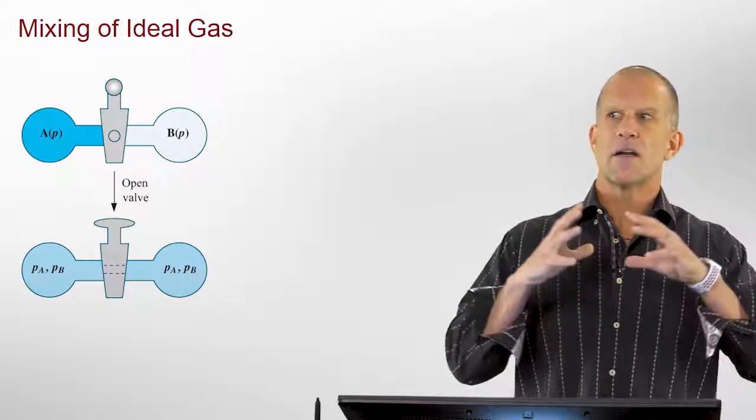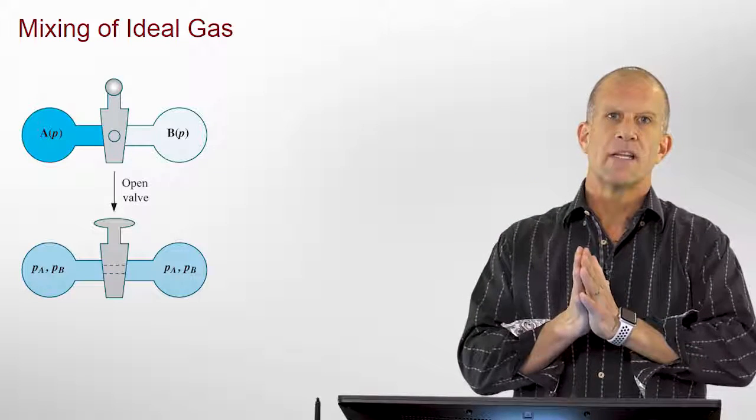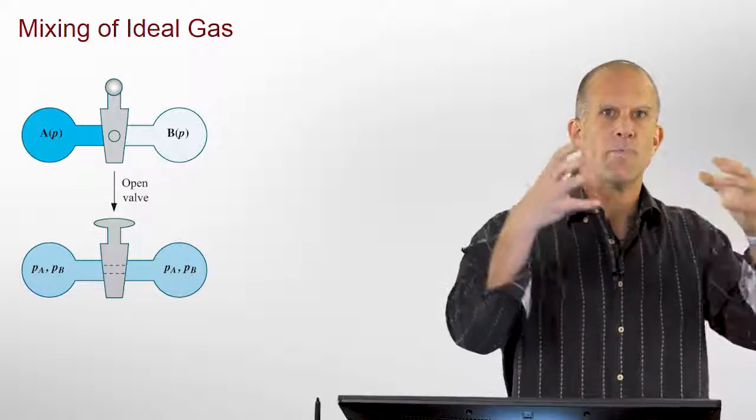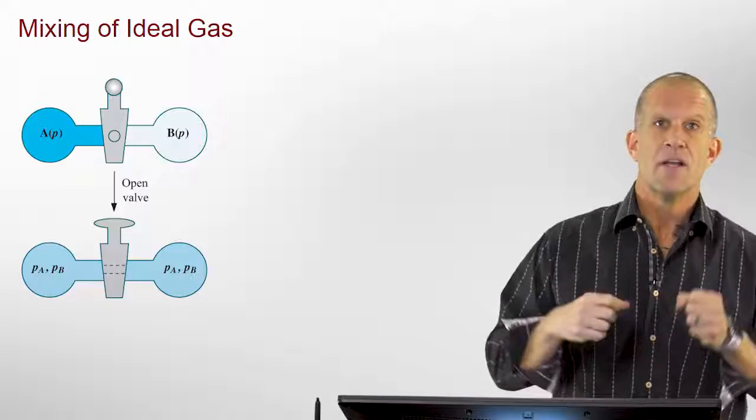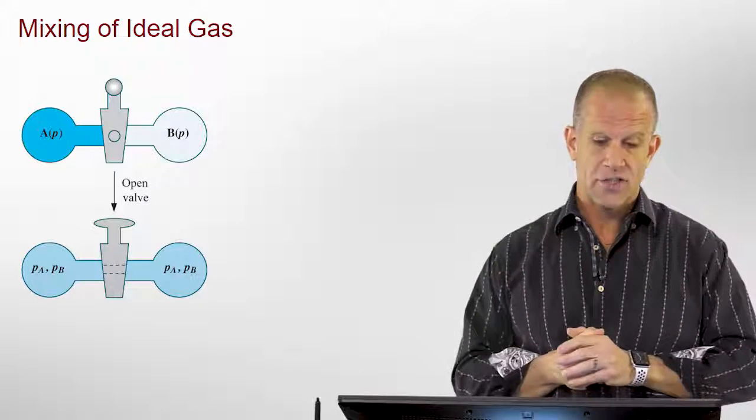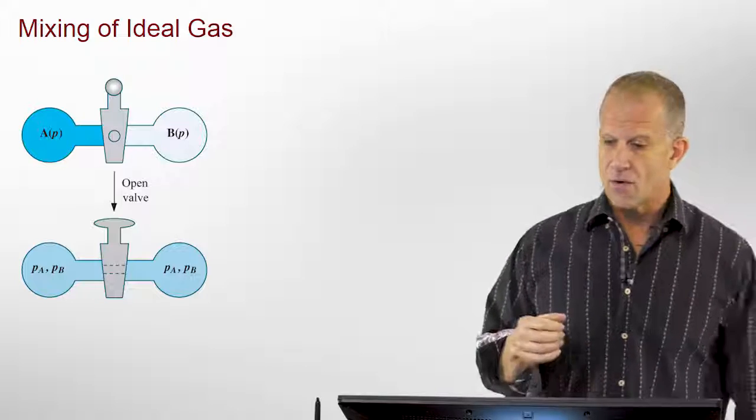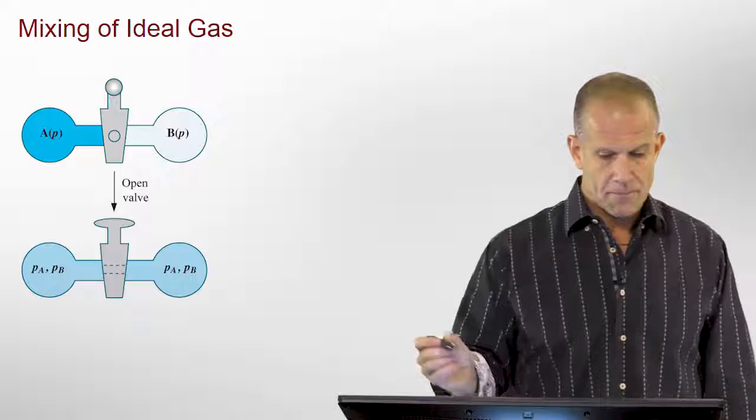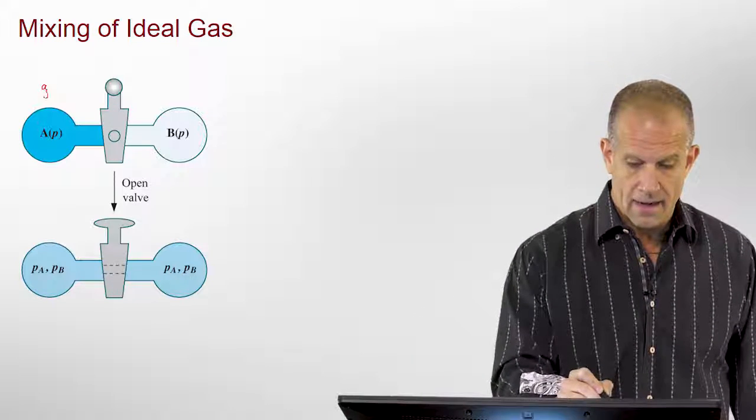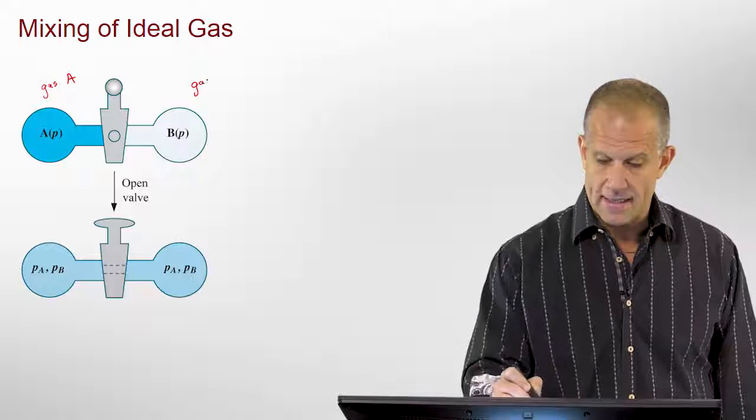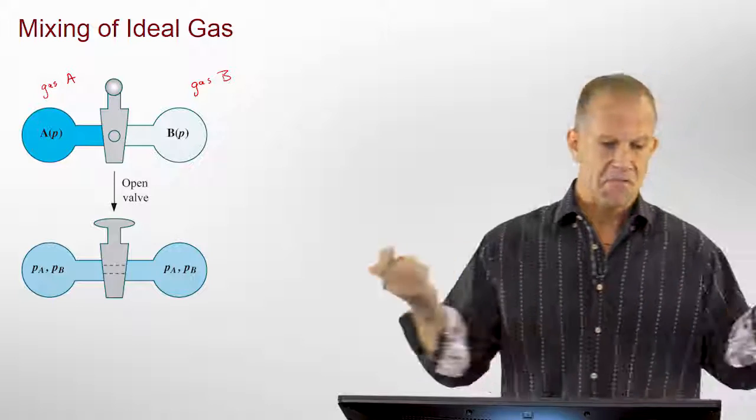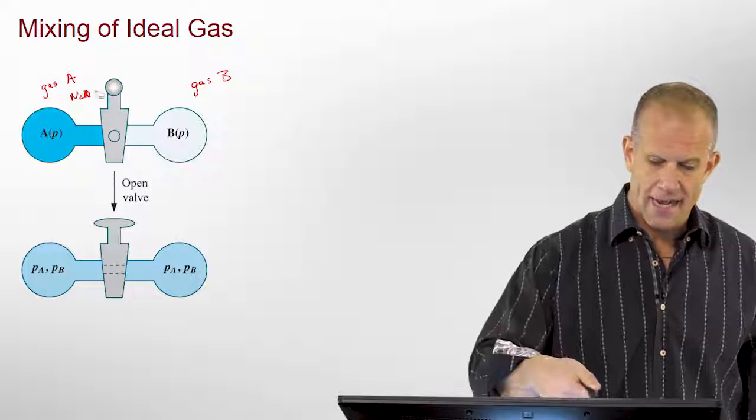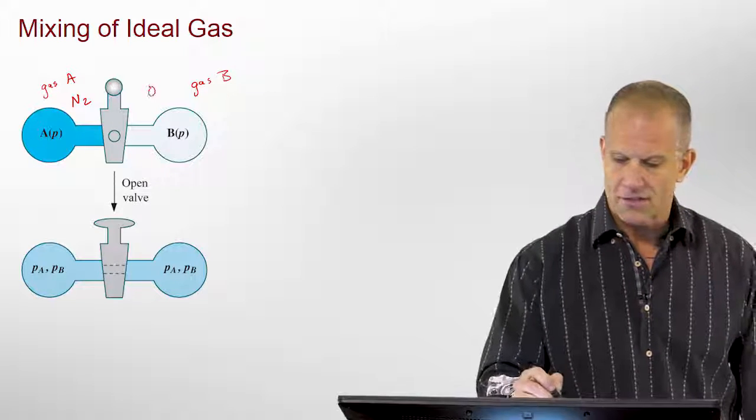Taking a very simple example will help us understand how this generally applies to systems. We want to motivate this by looking at something fairly simple. So we just have a gas A on one side and a gas B on the other side. Two different gases, say nitrogen gas and oxygen gas, for example.